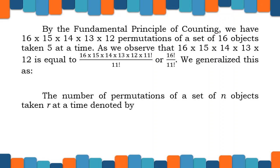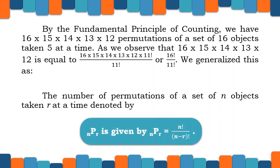We generalize this as: the number of permutations of a set of n objects taken r at a time, denoted by nPr, is given by nPr equals n factorial all over the quantity (n minus r) factorial.